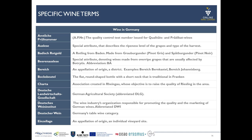Bereich is the subcategory of a region, so it could be translated as something like a district. An example is for the Mosel, for example the Bereich Bernkastel, and for Rheingau the Bereich Johannesberg. Boxbeutel — you might have come across this typical bottle shape. It's a flat, round-shaped bottle with a short neck which is traditional for wines from Franken.